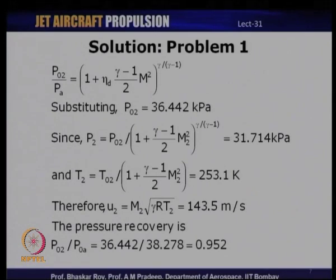Pressure recovery is the ratio of stagnation pressure at the intake exit to that at the intake entry. Between P₀ₐ and P₀₁ there are no losses, so P₀₁ = P₀ₐ, and pressure recovery = P₀₂/P₀ₐ = 36.442 / 38.278 = 0.952. This means there is roughly a 5% stagnation pressure loss in the diffuser due to frictional effects. Usually it is 2–3%, so this is on the higher side unless there is flow separation.